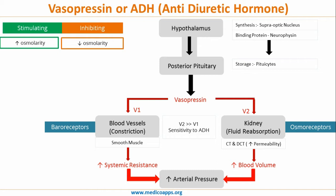The first signal is osmolarity. When blood osmolarity increases, the blood becomes thicker, so the body wants to conserve fluid and fluid reabsorption should happen — this is a stimulating signal for ADH production and secretion. The reverse happens in cases of decreased osmolarity.